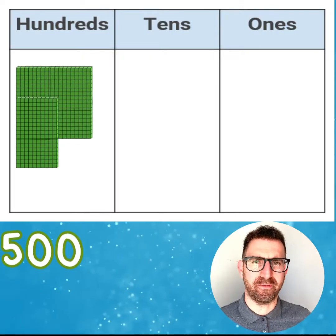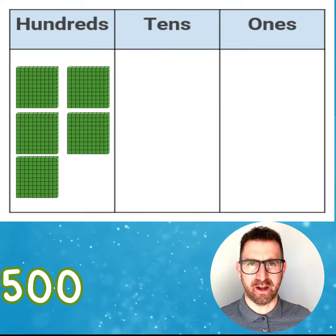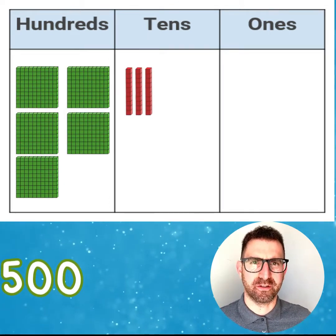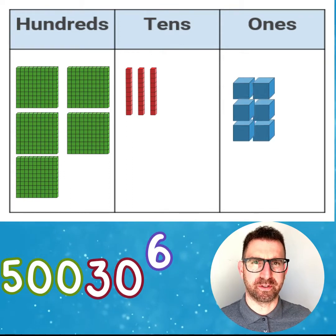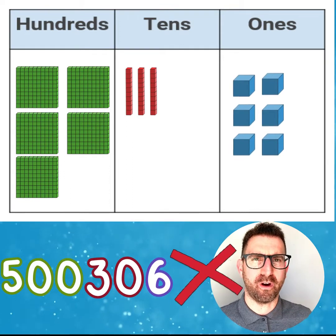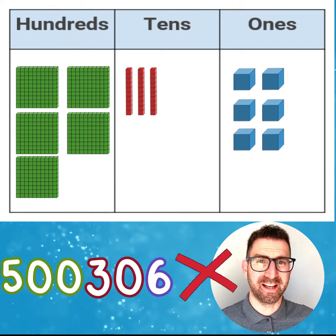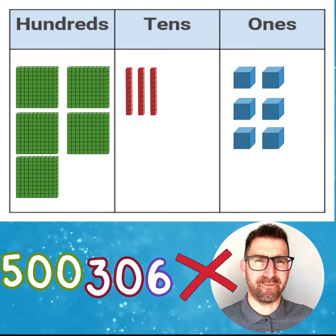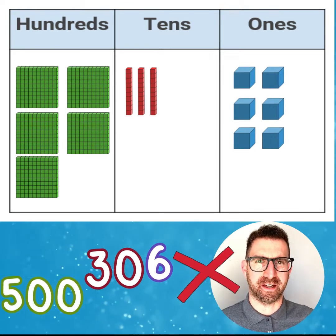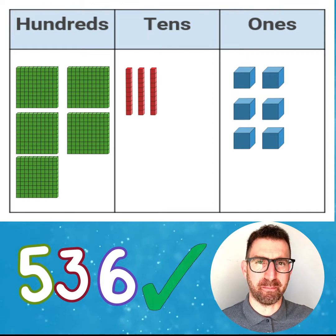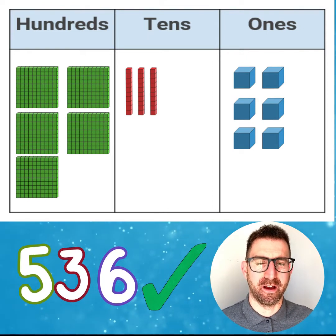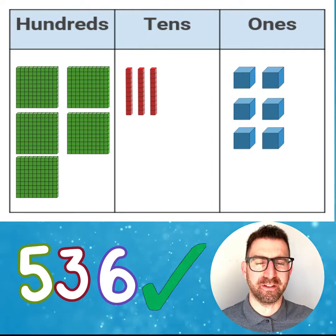Another thing to think about is how to write the numbers down. Here we have 5 hundred flats — 500, 3 ten rods — 30, and 6 one cubes — 6. We do not write or combine this number like 500,306. We need to make sure each digit goes into the correct place value column, like this: 536.